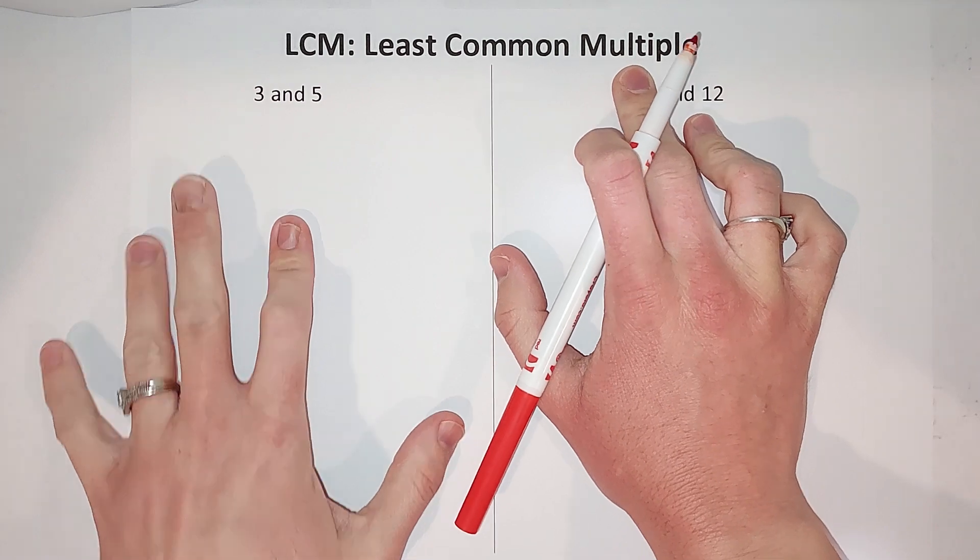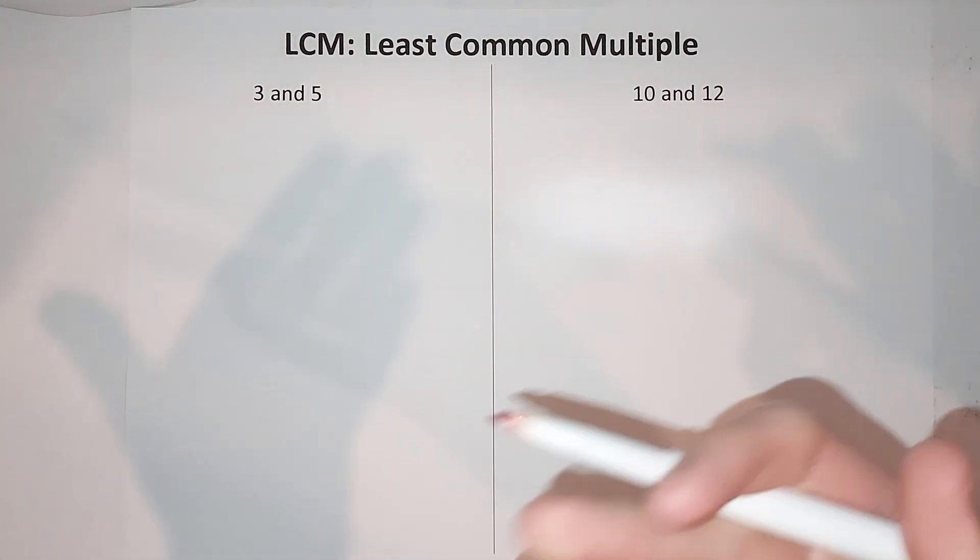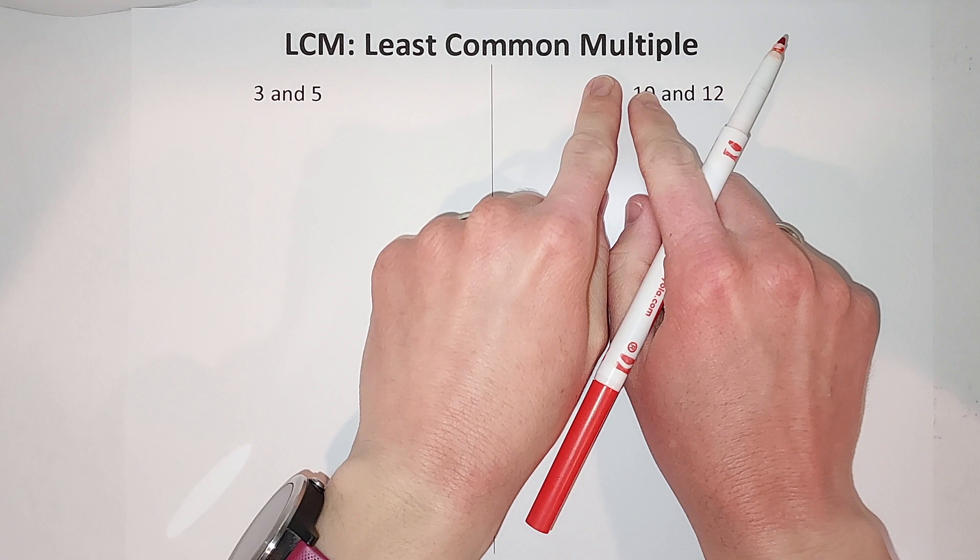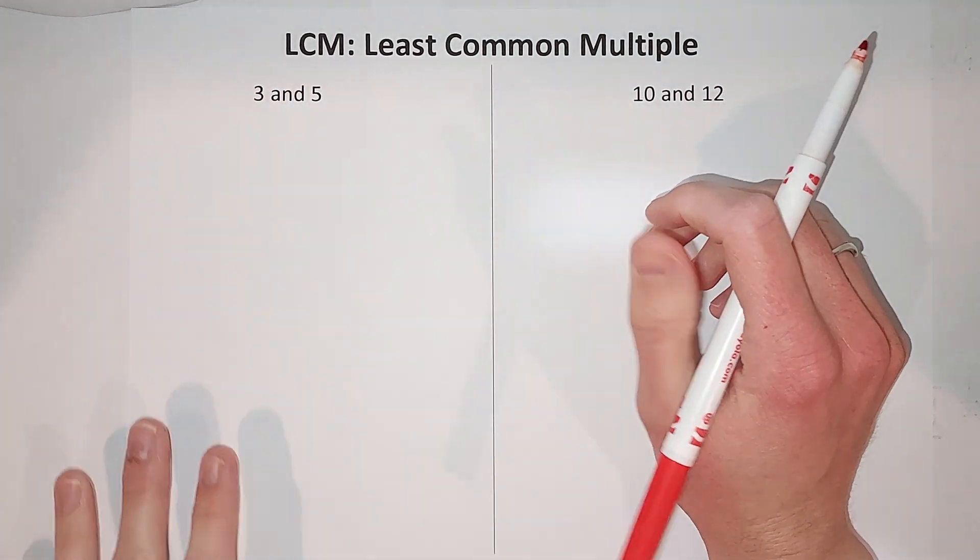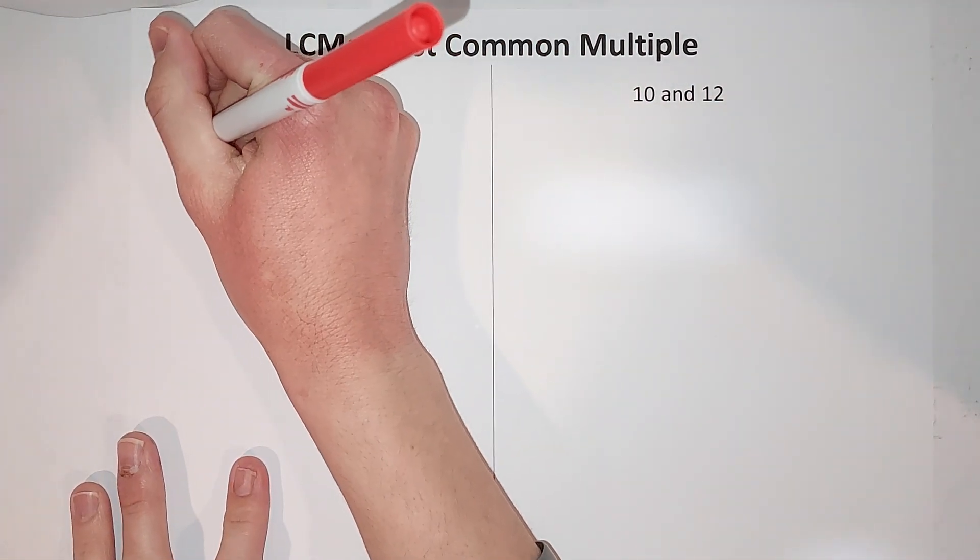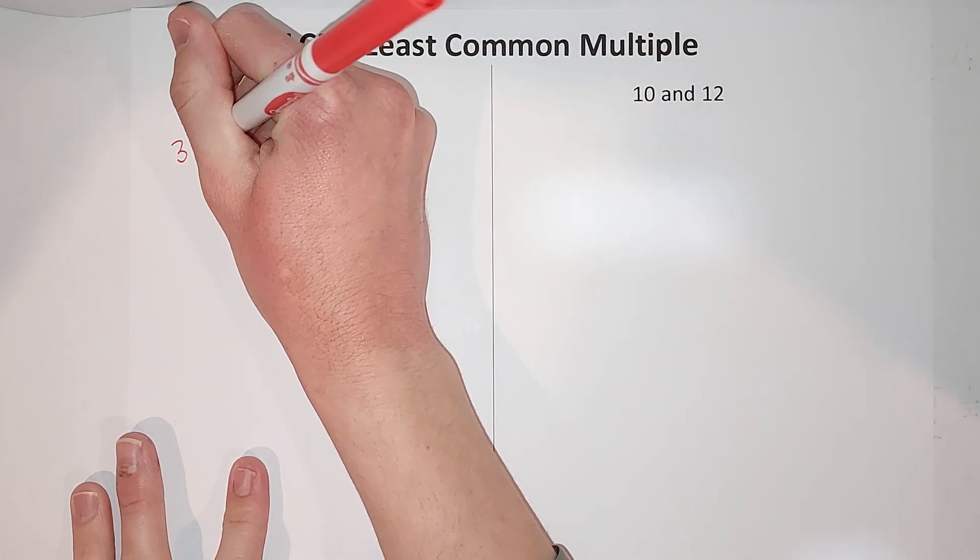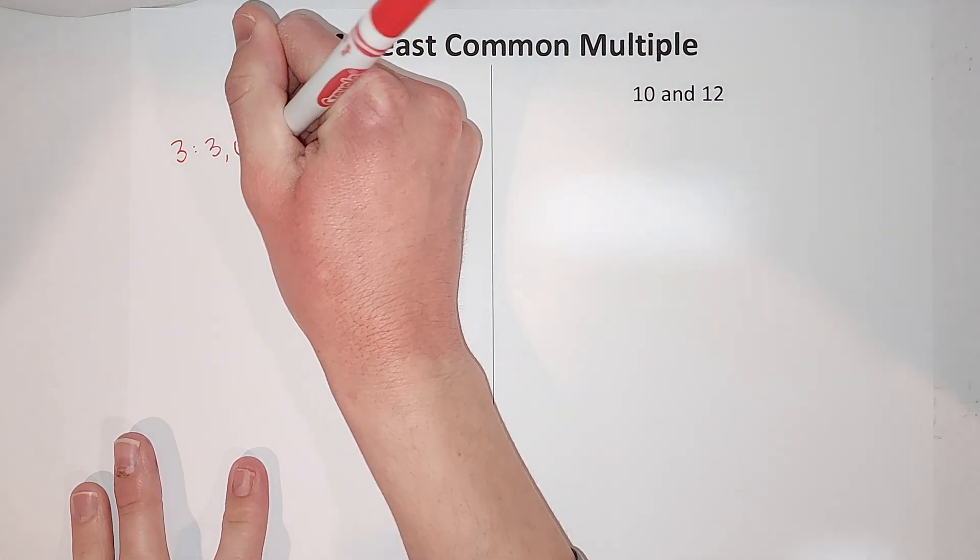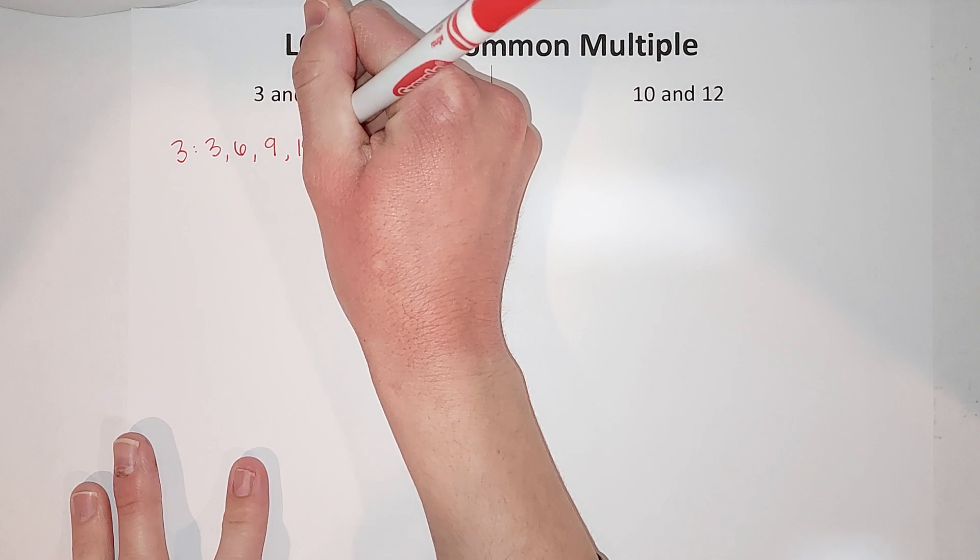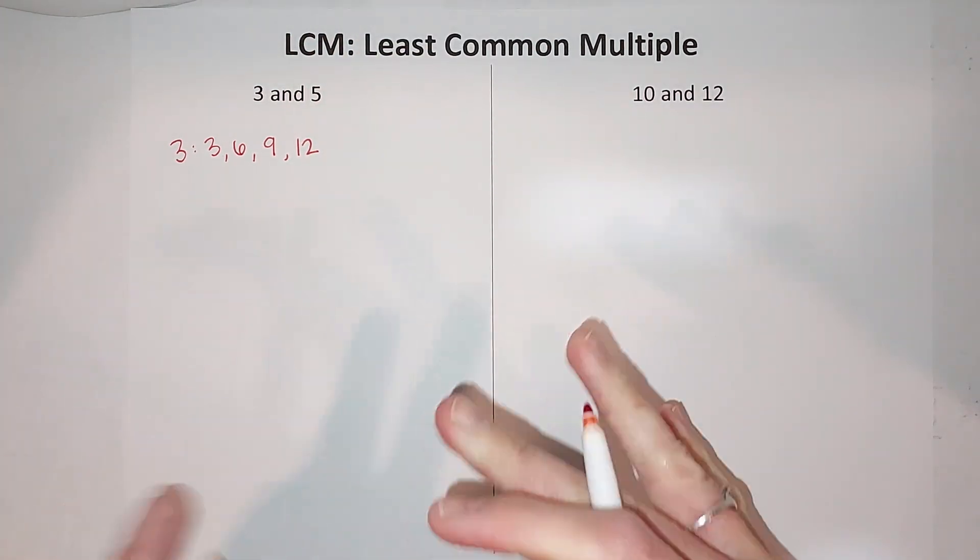So first of all, what's a multiple? A multiple is multiples of the number. So 3 times 1 is 3, 3 times 2 is 6, 3 times 3 is 9. Those answers are your multiples. So if I were to list out the multiples of 3, I would get 3, 6, 9, 12. I'm just adding 3 each time, counting by threes.